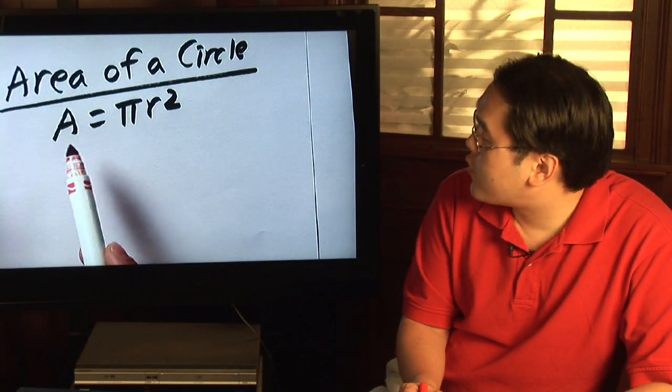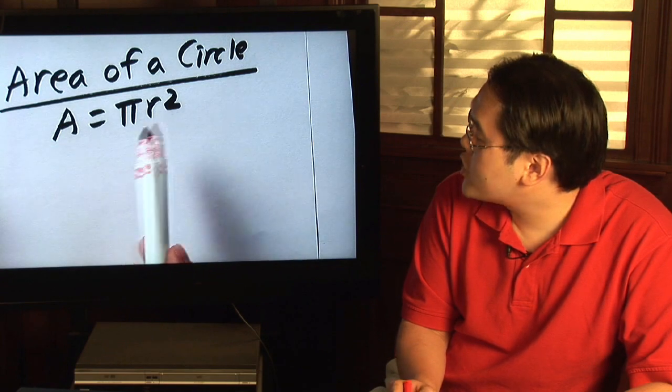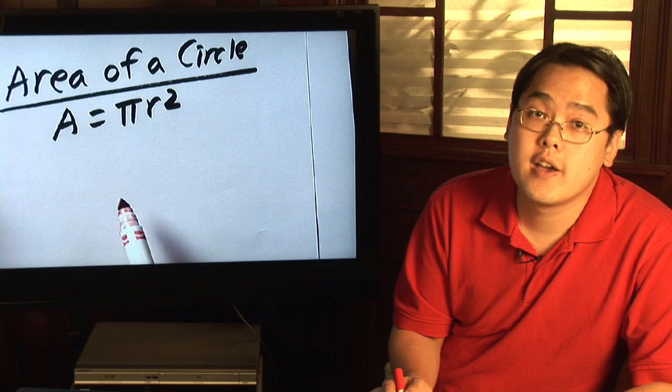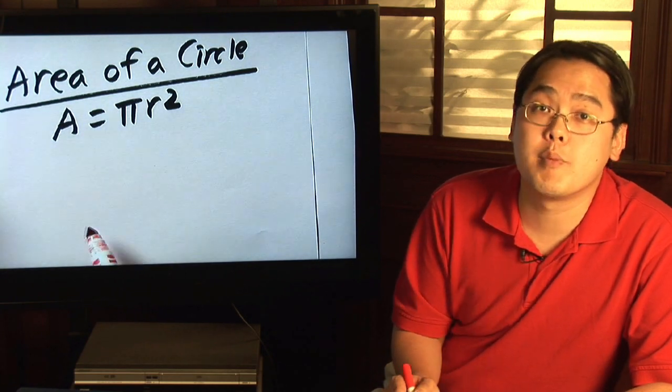Now, the area of a circle formula is A equals pi R squared, where R is the radius. So as I mentioned earlier, as long as you know the radius, finding the area of a circle should be pretty straightforward.